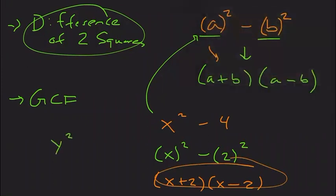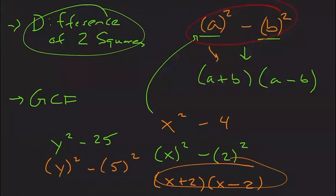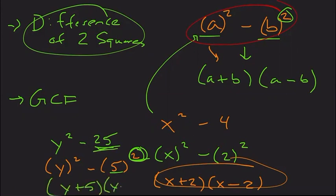Let's say we have y squared minus 25. Let's rewrite that in this format — difference of two squares. So y squared is just y squared. And 25 is going to be 5 squared. How do we get that? Because 25 means what number times itself gives us this — what number multiplied two times gives us this. That's 5. 5 multiplied two times gives us 25. So this becomes (y + 5) times (y − 5).